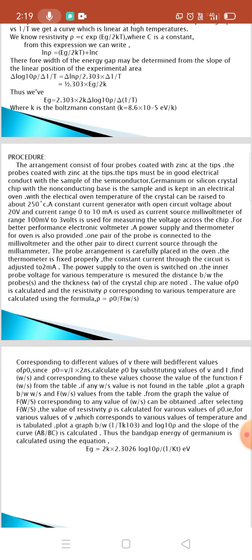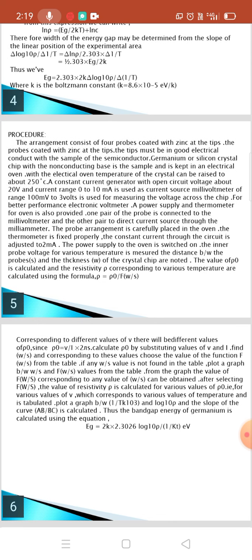A constant current generator with open circuit voltage above 20V and current range 0 to 10 mA is used as current source. A millivoltmeter of range under mV to 3V is used for measuring the voltage across the chip. For better performance, electronic voltmeter, a power supply and a thermometer for the oven is also provided. One pair of the probes is connected to the millivoltmeter and other pair to the direct current source through the milliammeter. The probe arrangement is carefully placed in the oven. The thermometer is fixed.